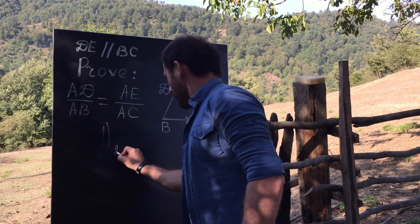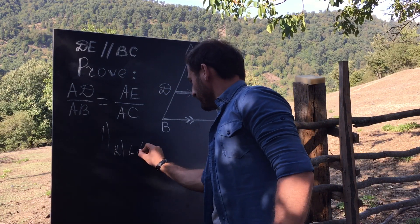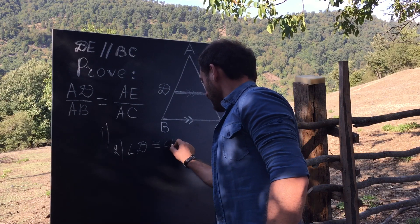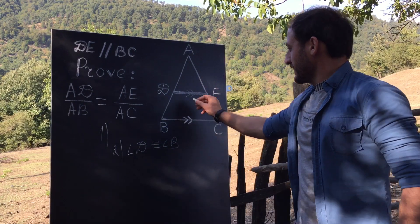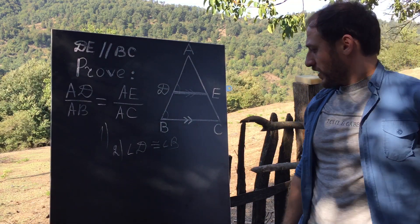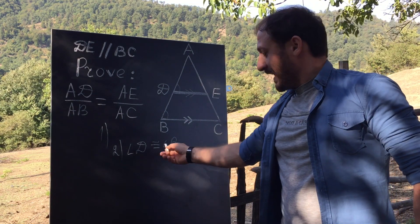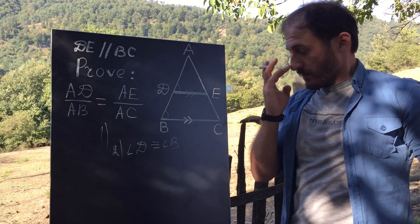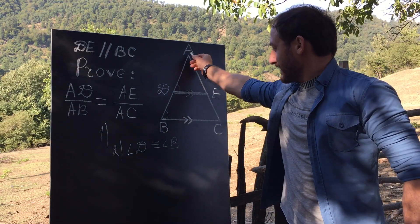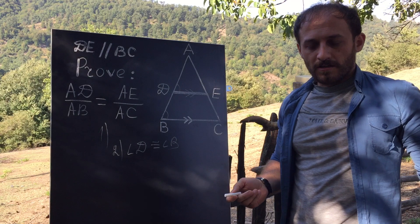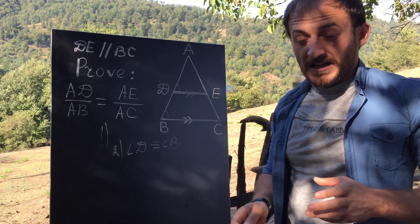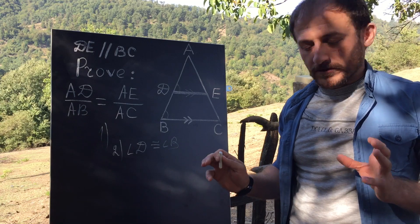Step 2: Angle D is congruent to angle B. Why? We know these are corresponding angles because DE parallel BC and AB is a transversal. We know if two parallel lines are cut by a transversal, then corresponding angles are congruent.